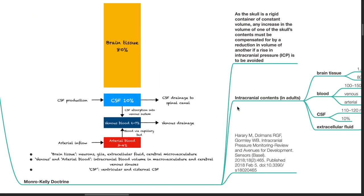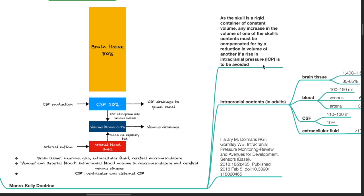The Monroe-Kelly Doctrine states that, as the skull is a rigid container of constant volume, any increase in the volume of one of the skull's contents must be compensated for by a reduction in volume of another if a rise in ICP is to be avoided.